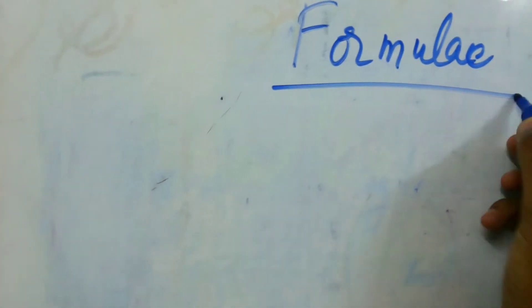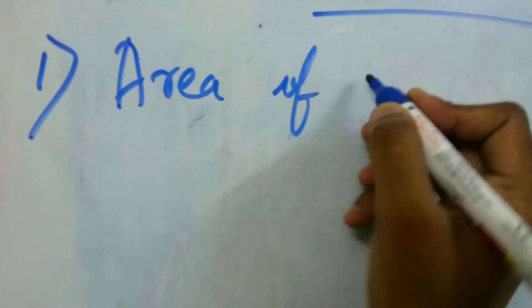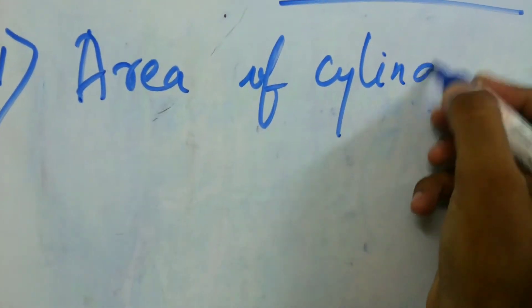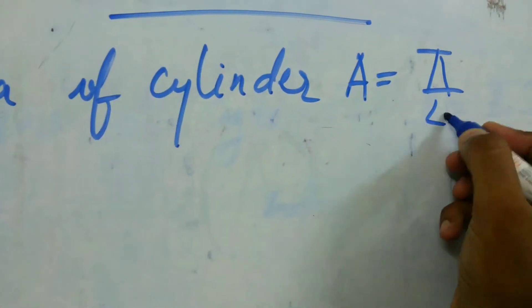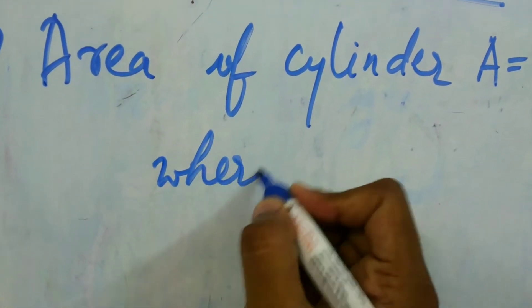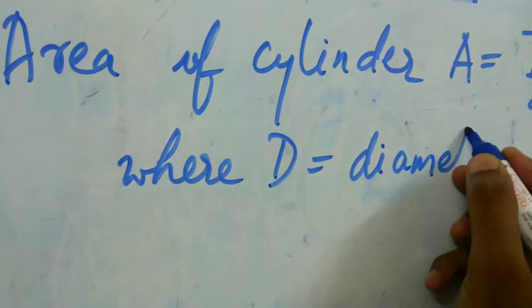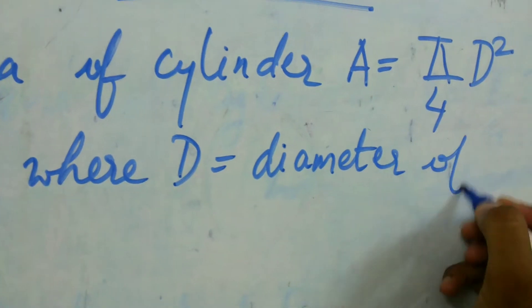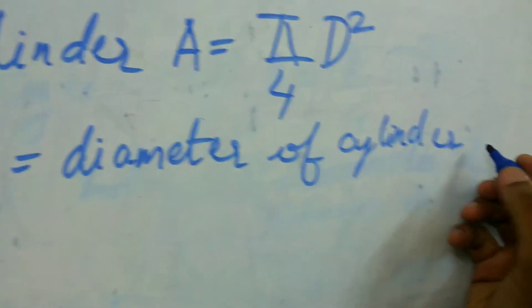The first formula is area of cylinder. Area of cylinder, that is A, is equal to π/4 × D², where D is the diameter of the cylinder or piston.